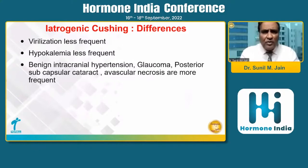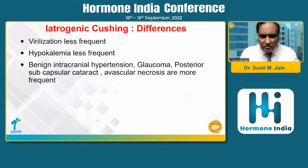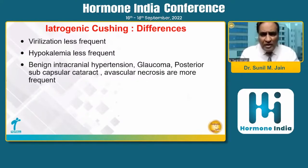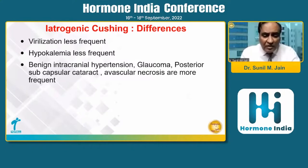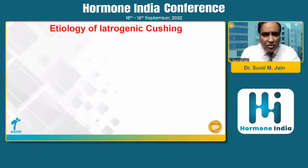Rather, a few other things like benign intracranial hypertension, glaucoma, subcapsular cataract, and avascular necrosis are more commonly seen features with exogenous Cushing's. During the COVID era, many doctors saw patients with avascular necrosis of bone, including facial bones and maxillary bones — many such cases were seen because of the effect of exogenous steroids on bone.